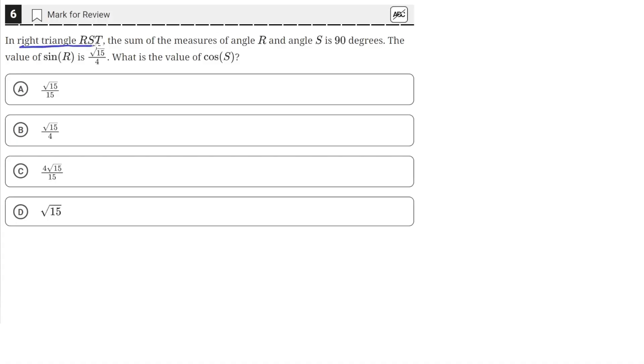In right triangle RST, the sum of the measures of angle R and S is 90 degrees. The value of sine R is square root 15 over 4. What is the value of cosine of S?